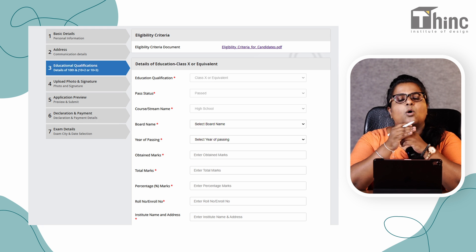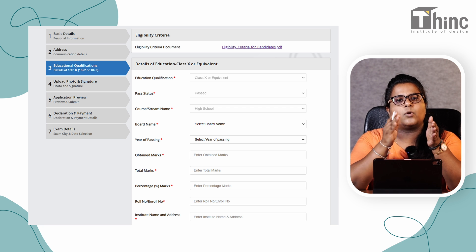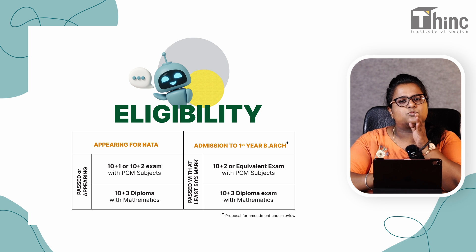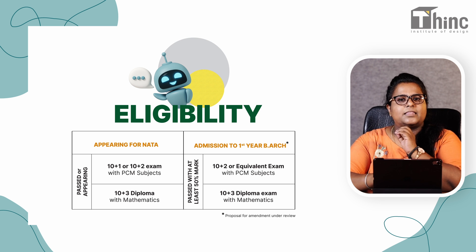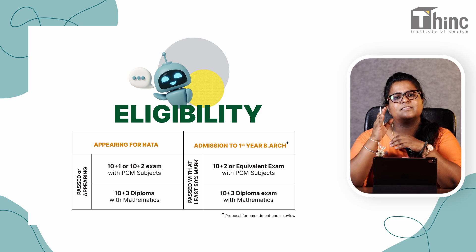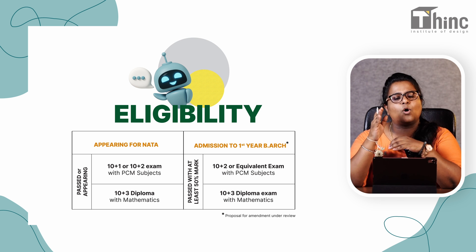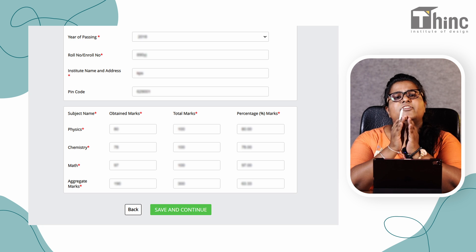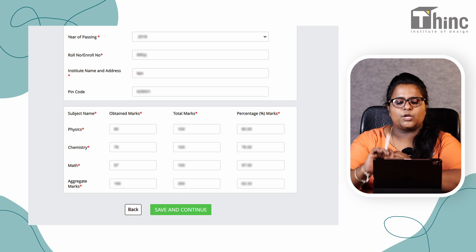Following that, you will be asked to fill your eligibility criteria. There are two different eligibility criteria: one to write NATA, and one to get admission in B.Arch colleges. To write NATA, you should have passed or be appearing for 10+1 or 10+2 with PCM, or 10+3 with Mathematics as a compulsory subject. For B.Arch college admission, candidates should have a total aggregate of 50% and also 50% aggregate in Physics, Chemistry, and Mathematics. Please note that this amendment is still under review — stay tuned with Think Institute of Design for more updates.